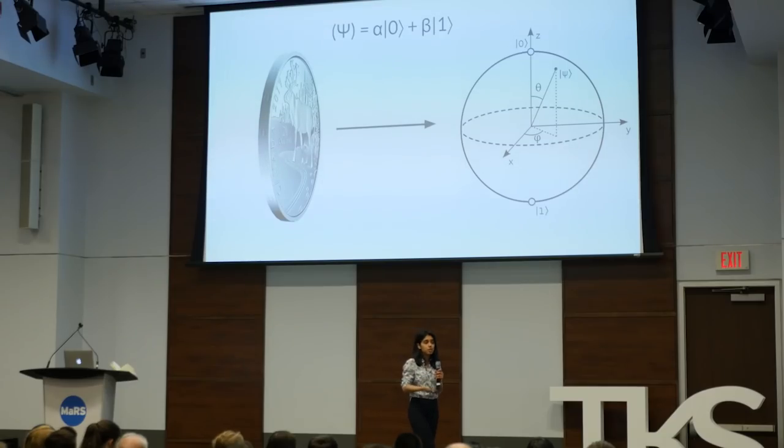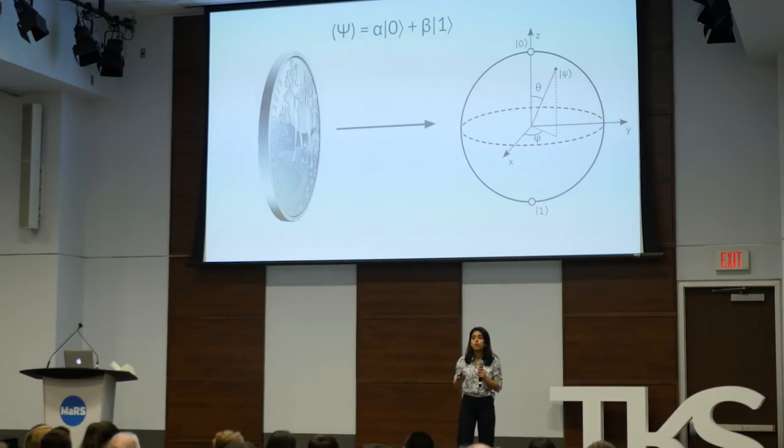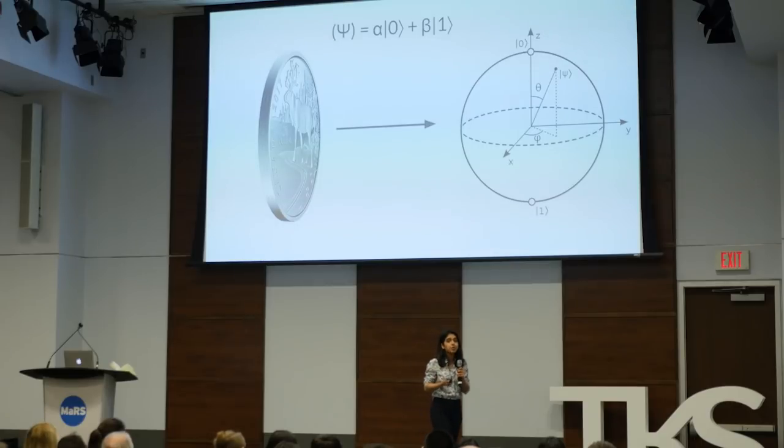In this superposition state, imagine I write an X in a book on one of the pages, and the library where the book is has millions of books. A classical computer will go through every single page one at a time, which can take a really long time. But with a quantum computer, a qubit in superposition can go through the pages of every book simultaneously and find that X in a short amount of time. This is absolutely insane.